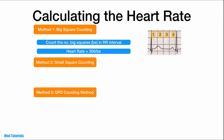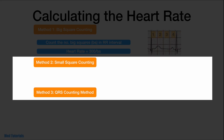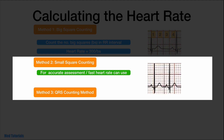In method 2, we use the small squares to calculate the heart rate. It is especially useful if you want to accurately assess the heart rate, or if the heart rate is fast and there aren't enough big squares between two QRS complexes. The heart rate is calculated as 1500 divided by the number of small squares.